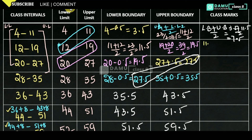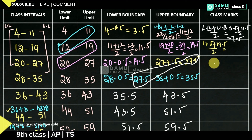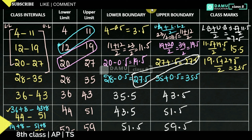For the second class: (11.5 + 19.5) / 2 = 31 / 2 = 15.5. For the third class: (19.5 + 27.5) / 2 = 47 / 2 = 23.5. For the fourth class: (27.5 + 35.5) / 2 = 63 / 2 = 31.5.